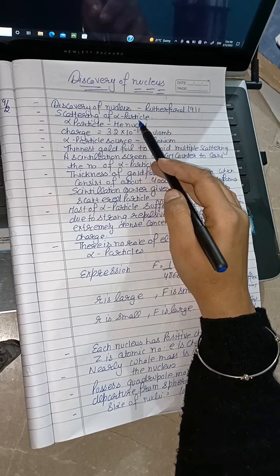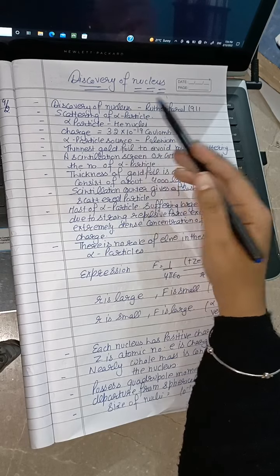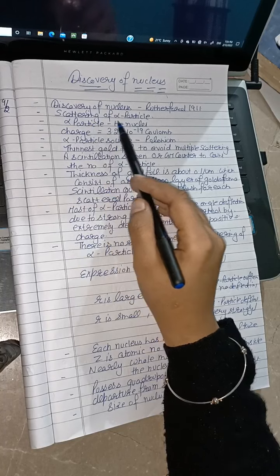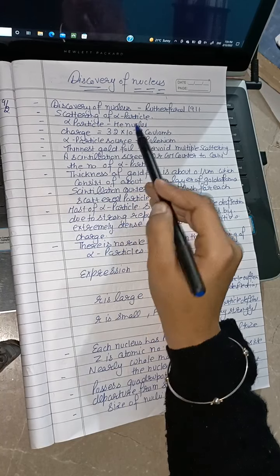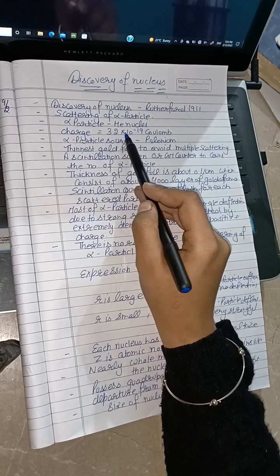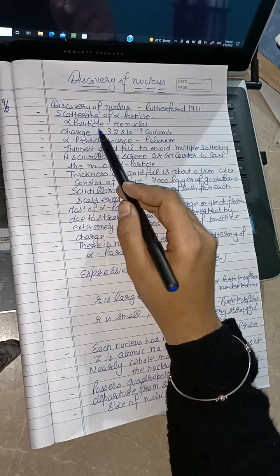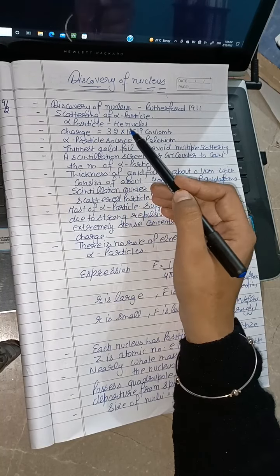This discovery was based on that experiment. Now, alpha particles are basically helium nuclei which have a charge of 3.2 into 10 to the minus 19 coulombs. Where did the alpha particles come from?